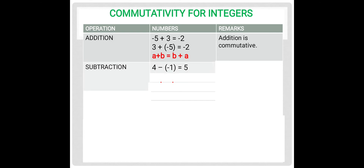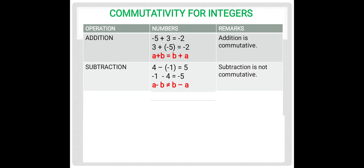Let us now check for subtraction. We will consider any two integers and subtract them. 4 minus negative 1: minus into minus will be plus, so 4 plus 1 equals 5. Let us now change the order: negative 1 minus 4 equals negative 5. So we see when the order of the numbers is changed, the answer also changed. Therefore, for any two integers a and b, a minus b will not be equal to b minus a. Hence, subtraction is not commutative.